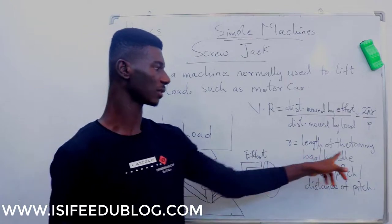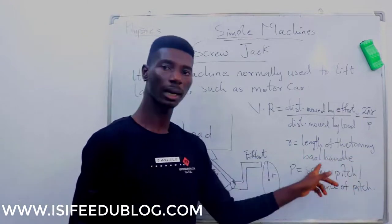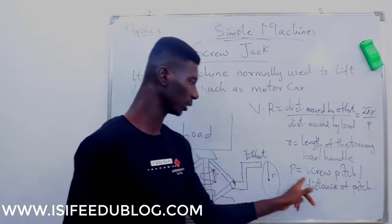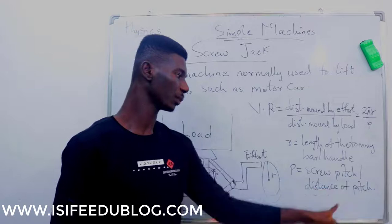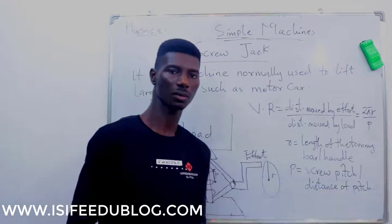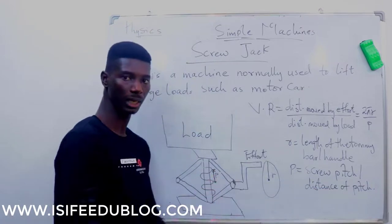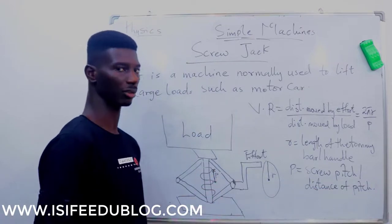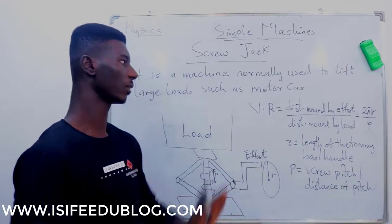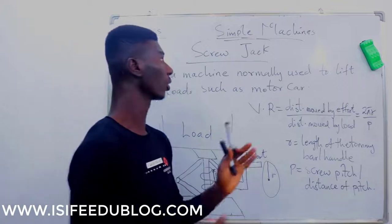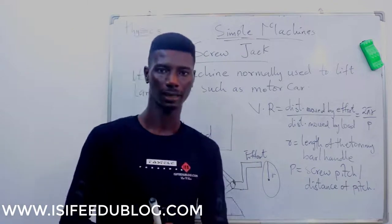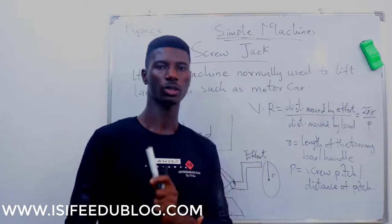So to summarize: 'r' stands for the length of the tommy bar or handle, and 'p' is the screw pitch or the distance of the pitch — as you can see from the diagram. That is the velocity ratio of a screw jack.